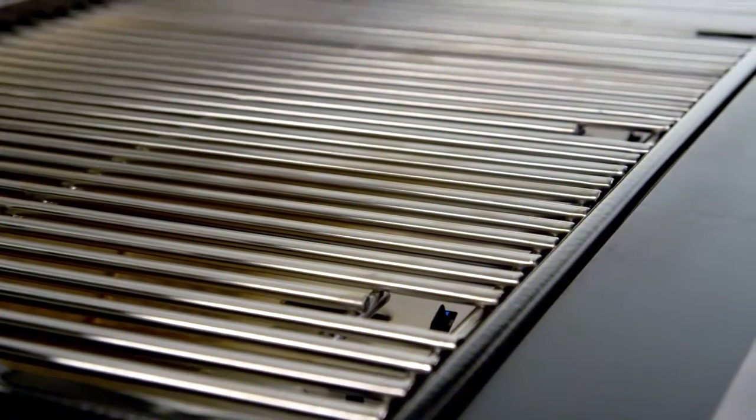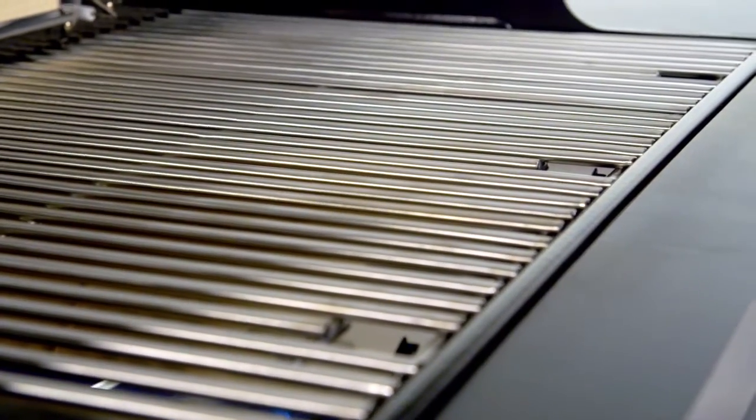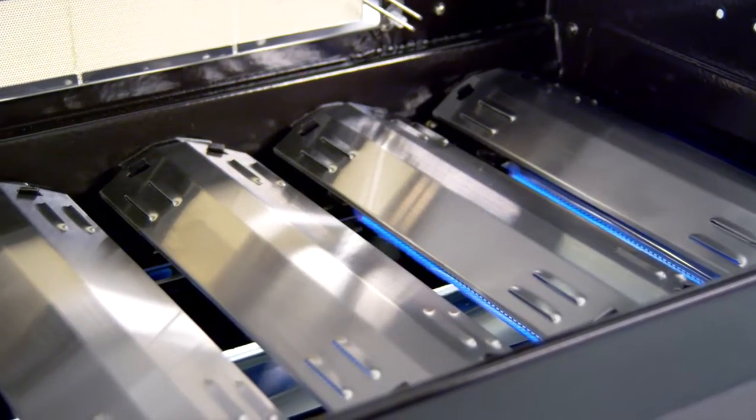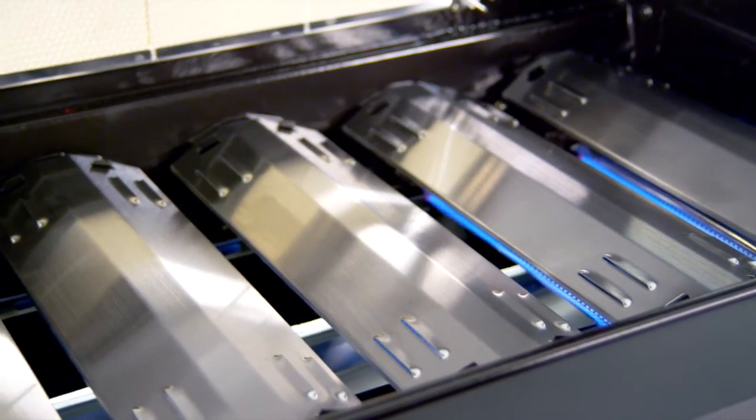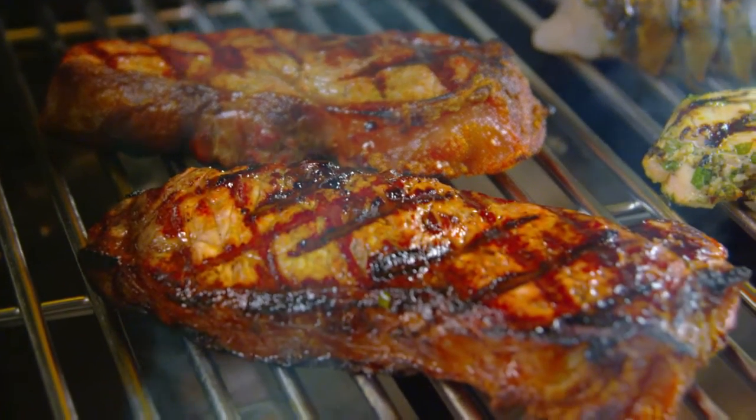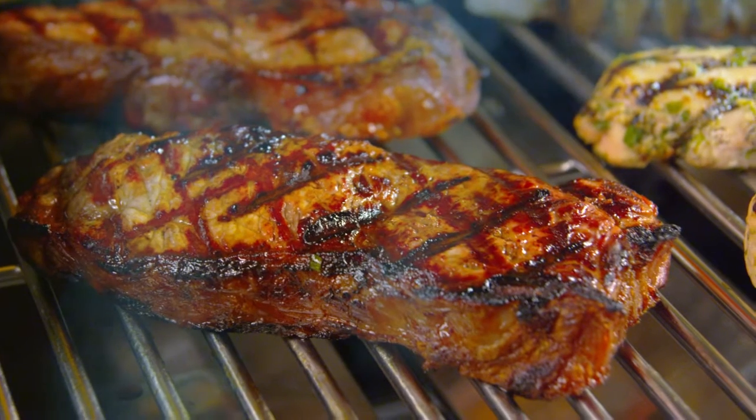The cooking grates are made from stainless steel with iron core for heat retention, longevity and cooking performance. The stainless steel heat tents protect the burners from food's natural juices and help distribute heat evenly across the entire cooking surface of your grill.